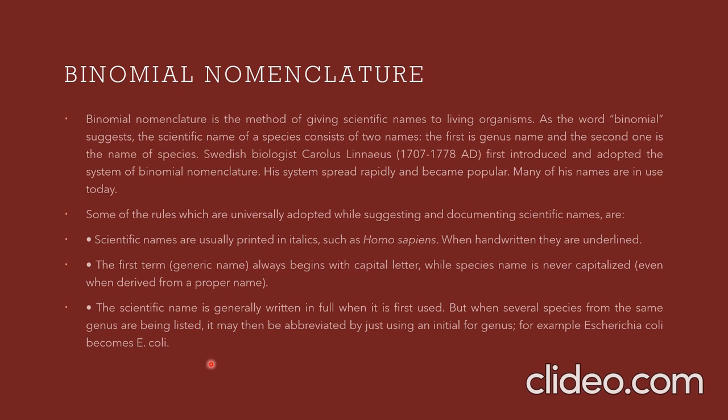The scientific name is generally written in full when it is first used. But when several species from the same genus are being listed, it may be abbreviated by using just an initial for the genus. For example, Escherichia coli becomes E. coli. This abbreviated form is used so that scientists and biologists can identify the species quickly.